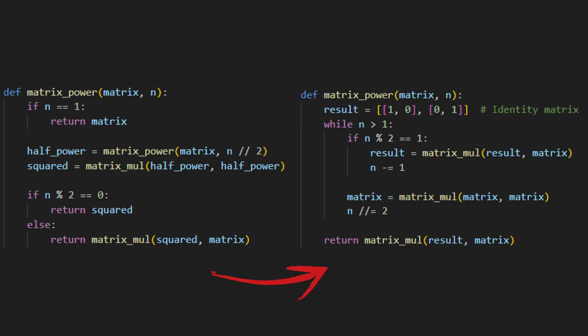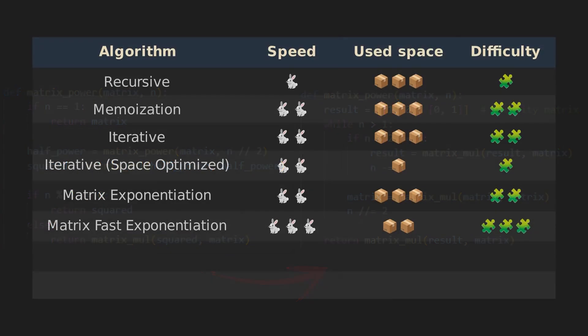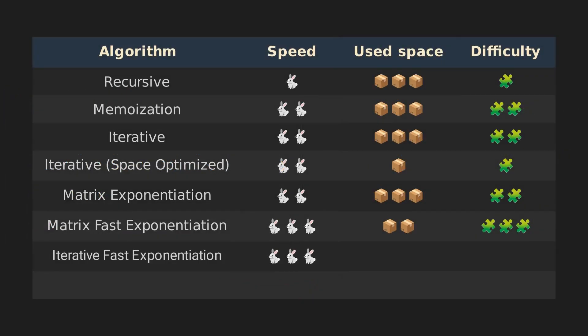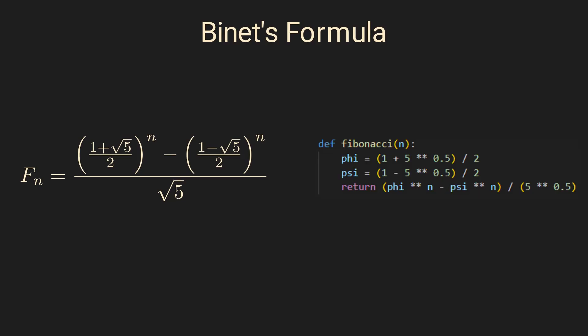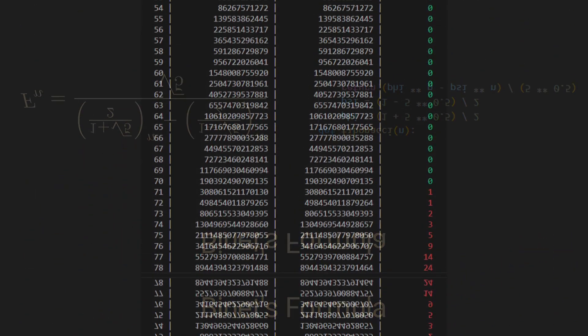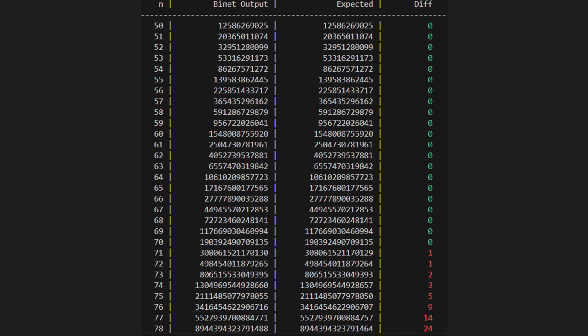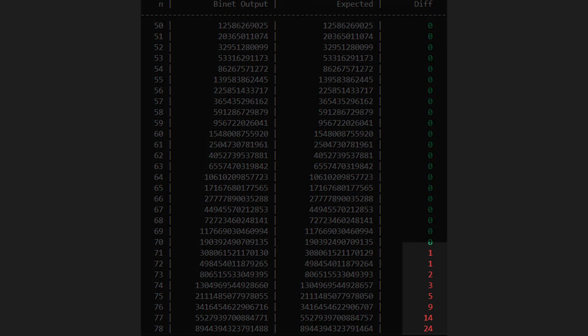There is also an iterative version of fast exponentiation, which we can use to save space. And that would be all — except there is another one: Binet's formula. A closed-form expression based on the golden ratio to jump straight to the answer. You plug in n, do some floating point math, and the answer will actually appear. The only issue is that it doesn't always work. Floating point numbers have limited precision, so the method eventually drifts away from the true values.